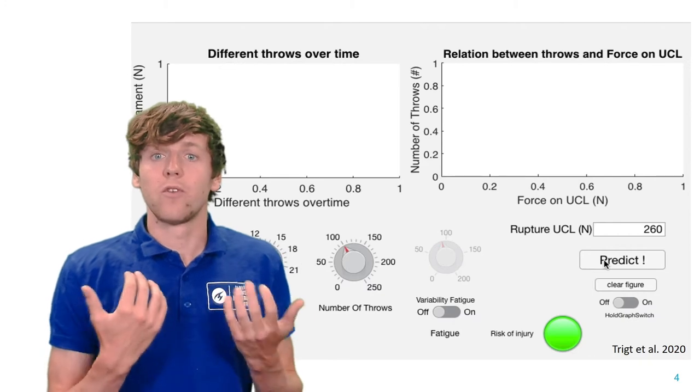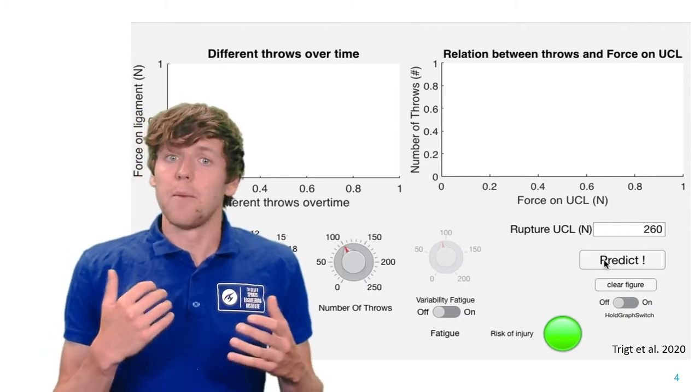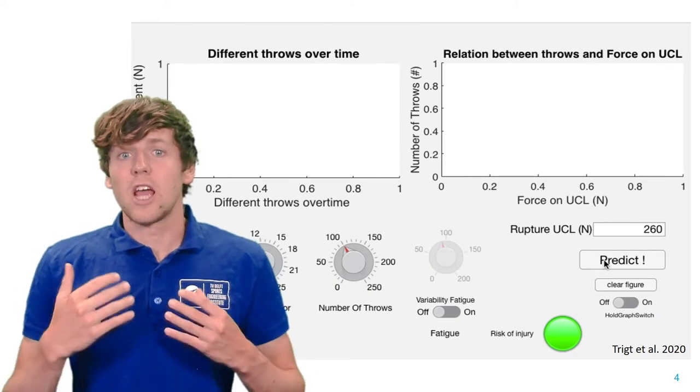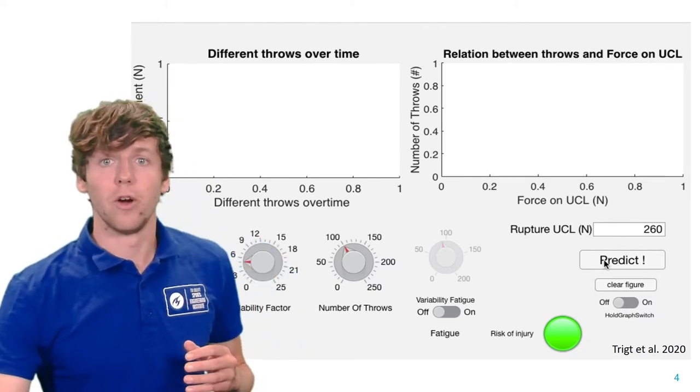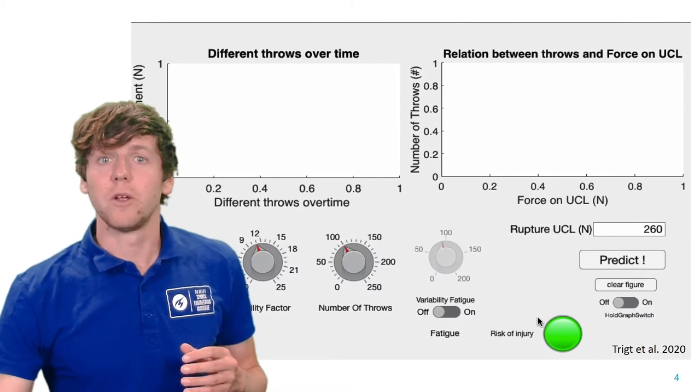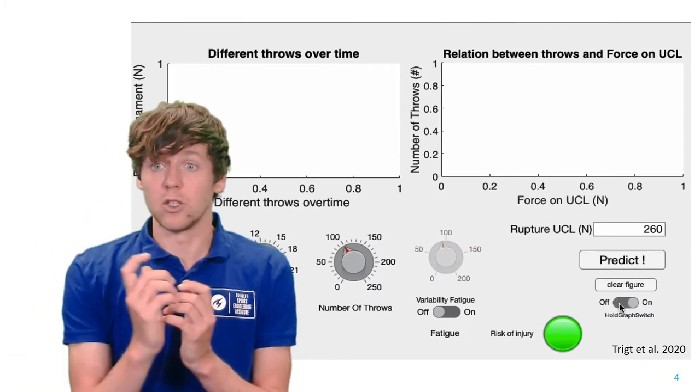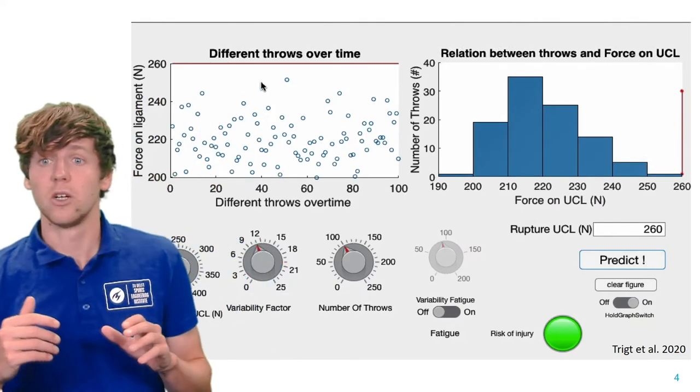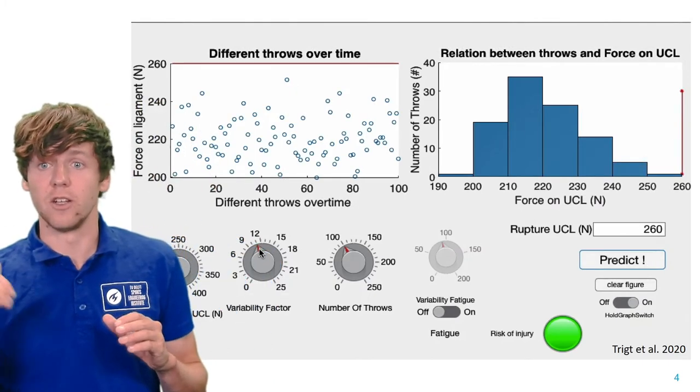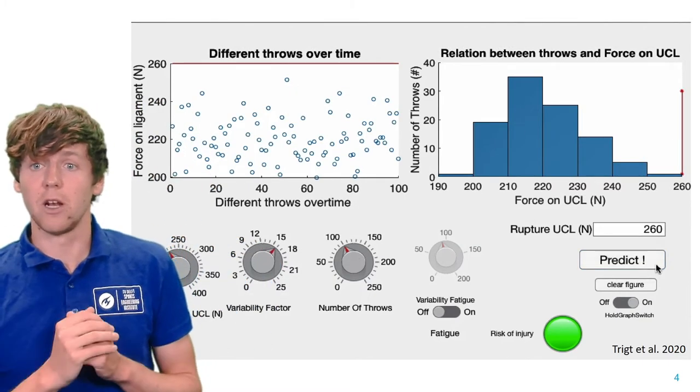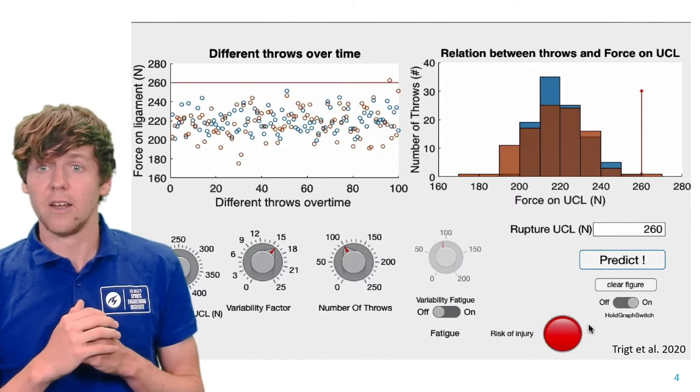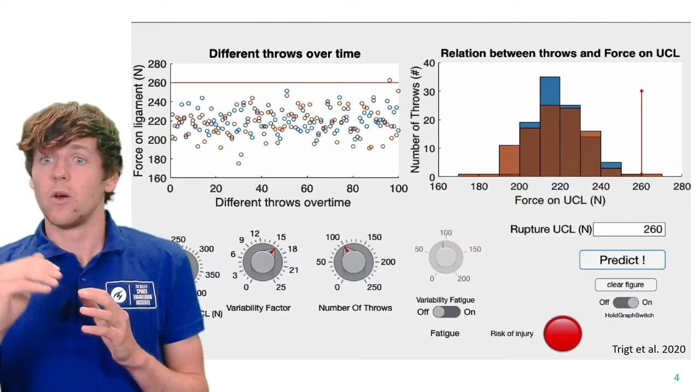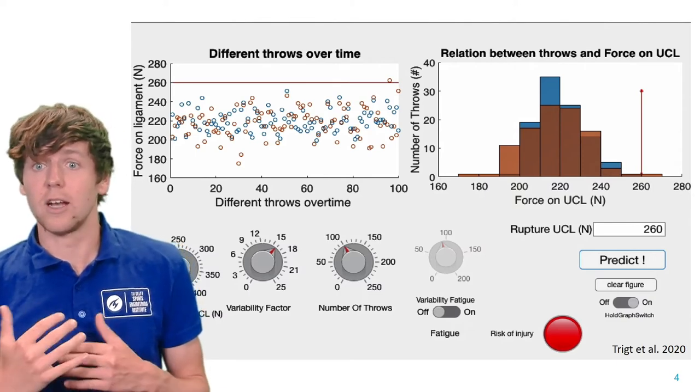Imagine we have two pitchers, and they both throw 100 balls and have the same average load, but a difference in load variability. We assume that the UCL will rupture when the injury threshold is 260 N. We can see here for this pitcher that the injury threshold is not exceeded. If we now increase the variability and we predict again for this pitcher, a higher variability will exceed the injury threshold and thus result in an injury.